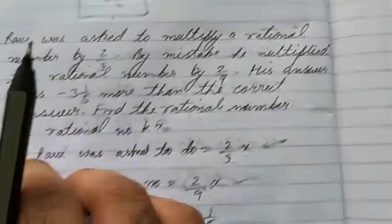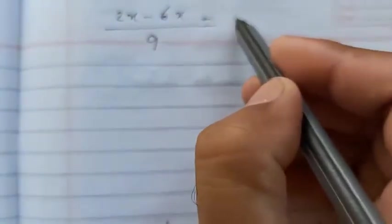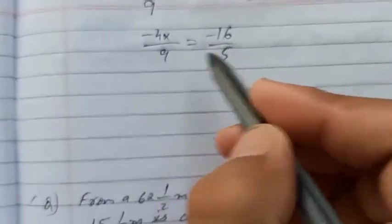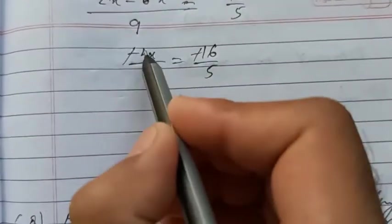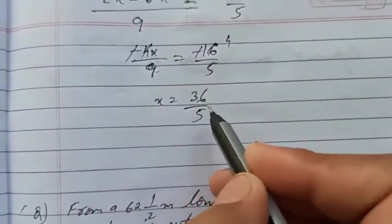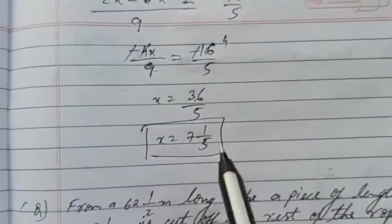Now solve it further. Take the LCM, which will be 9. Three times is 6x, minus 2x here, equals 16/5. Solve it further, cross multiply. Minus minus cancels to plus. 36 upon 5, or if you want to change, you can change into mixed fraction also.